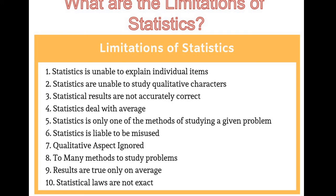The third limitation: statistical results are not accurately correct. There are only a few results that are accurately correct in statistics; almost all are only approximately correct. 100% accuracy is impossible in statistical work because statistical laws are based on averages.